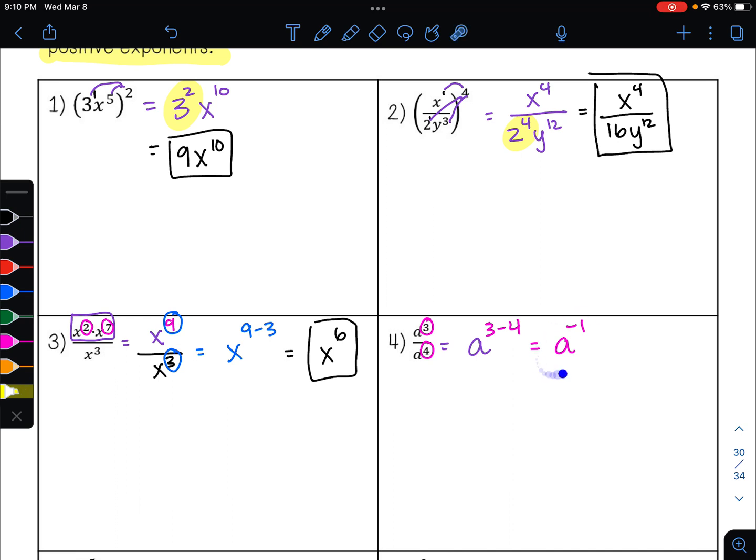So I cannot leave this like this. I need to simplify further. We know to make a negative exponent positive, we can move it into our denominator. 1 over a to the first is the same thing as 1 over a. That is my answer.